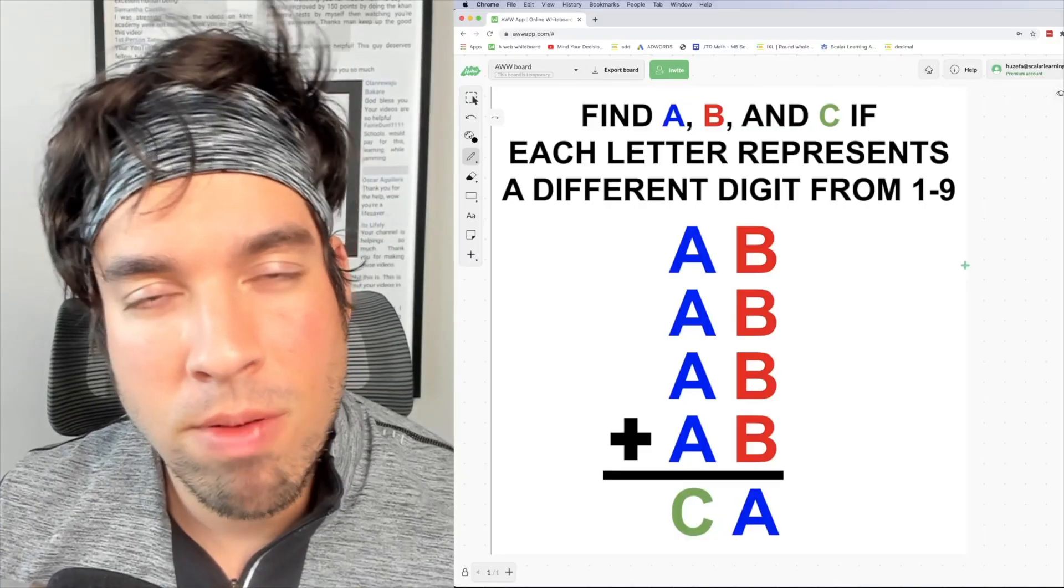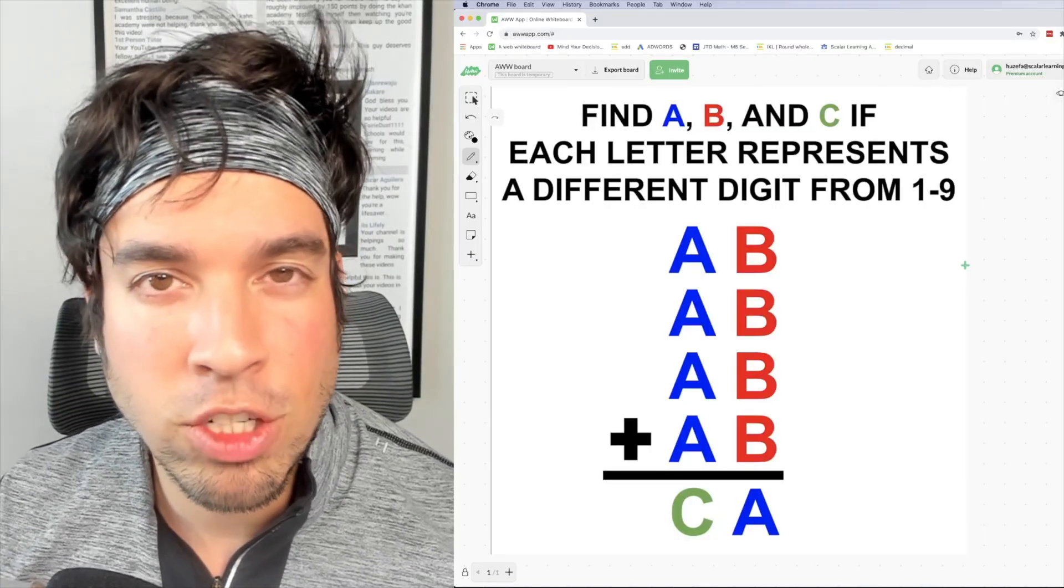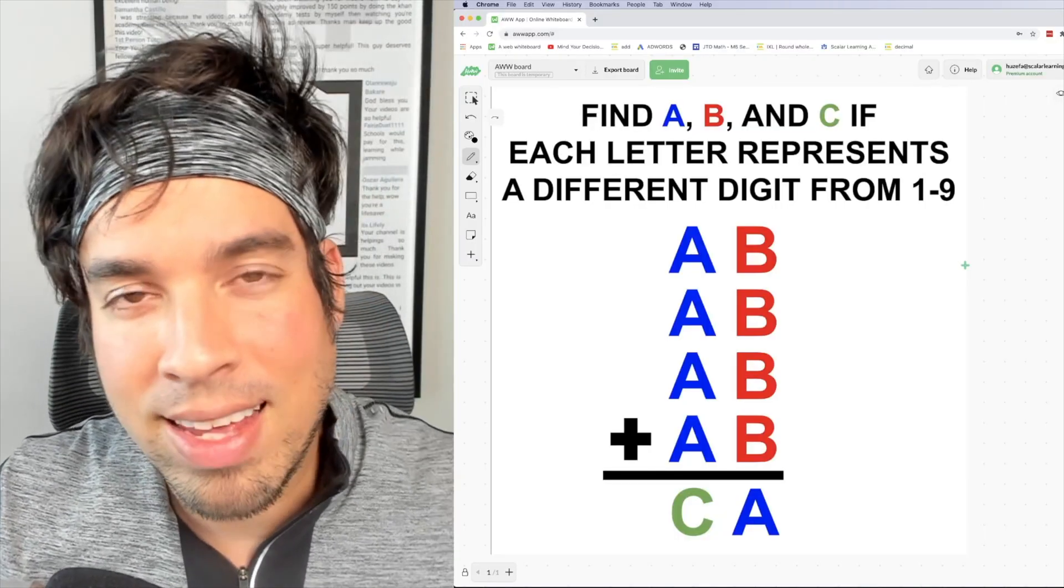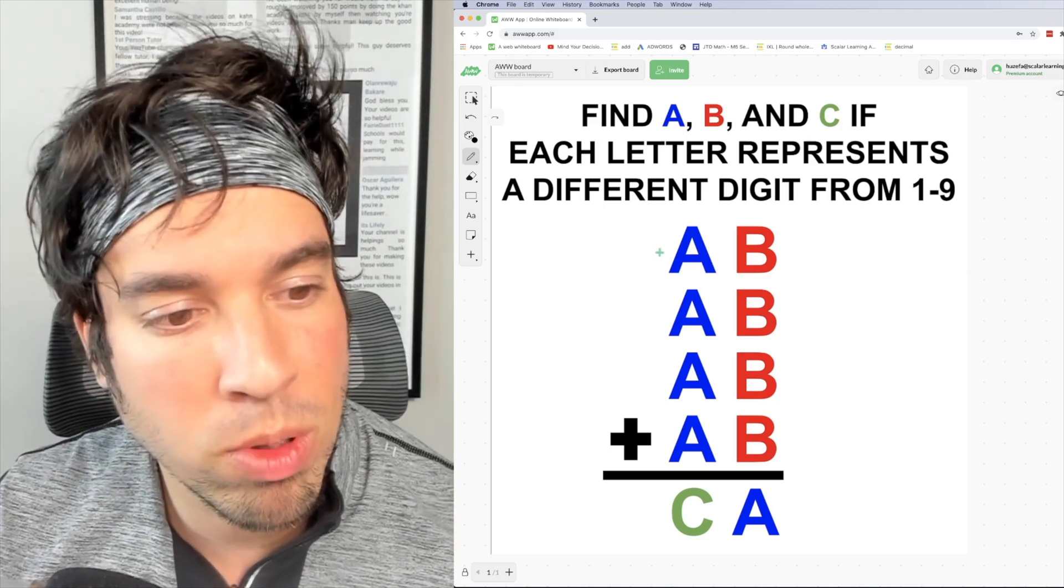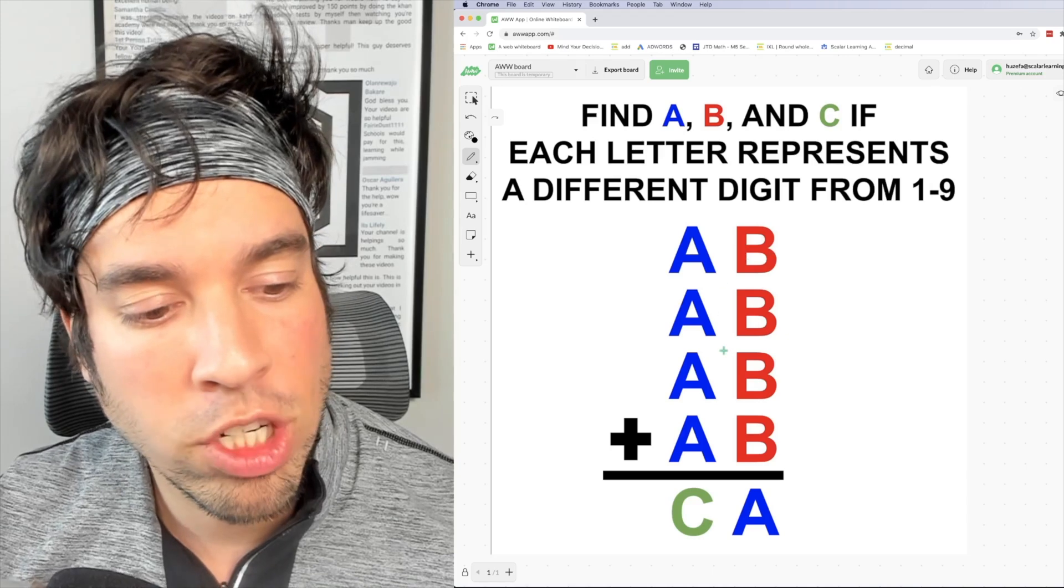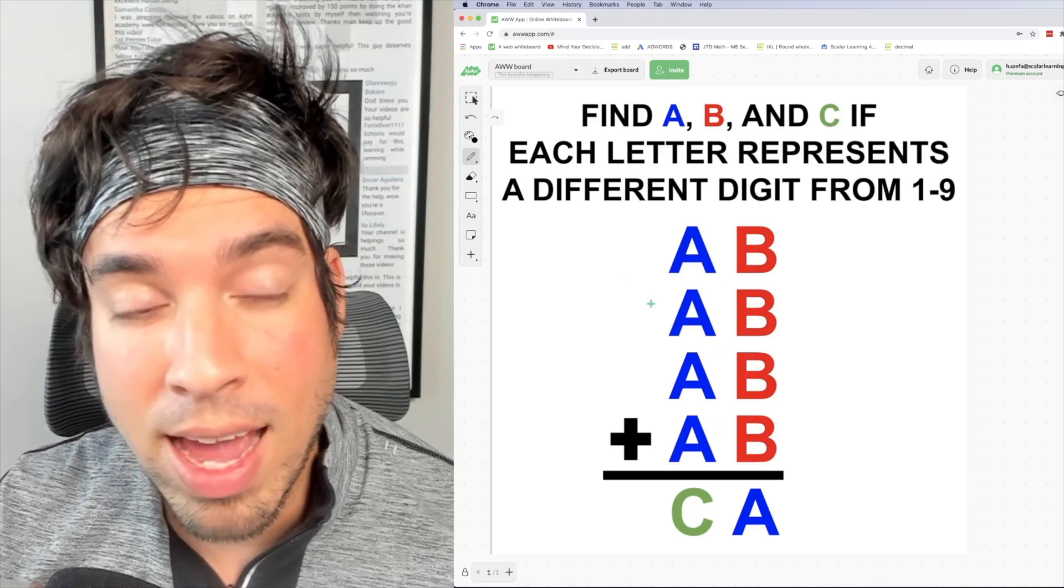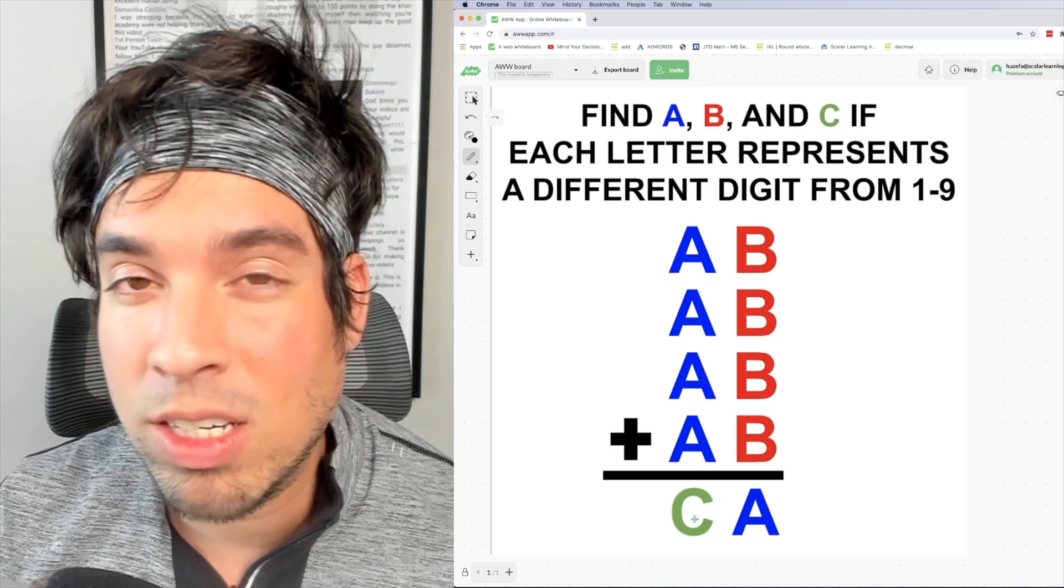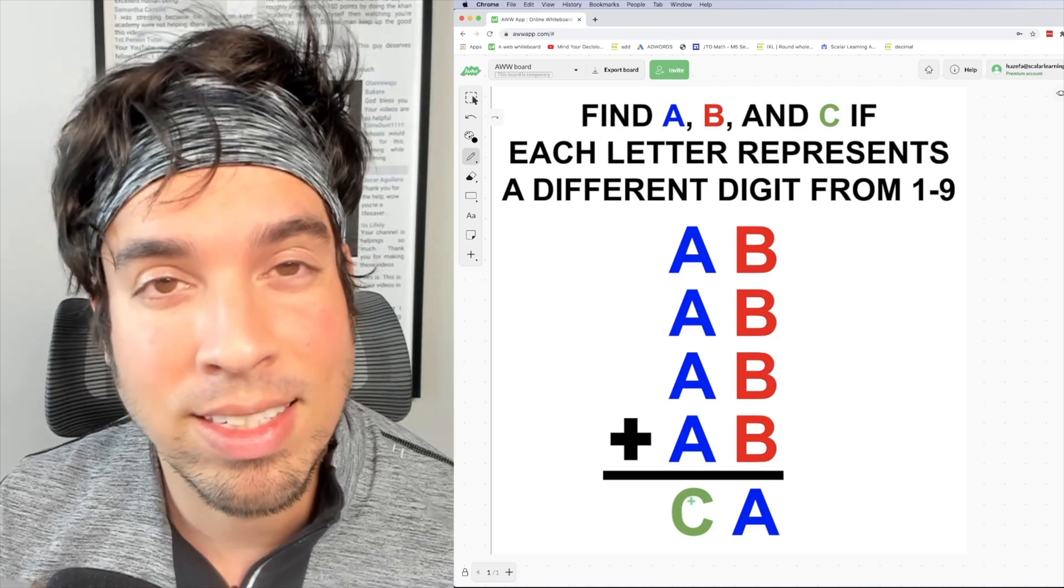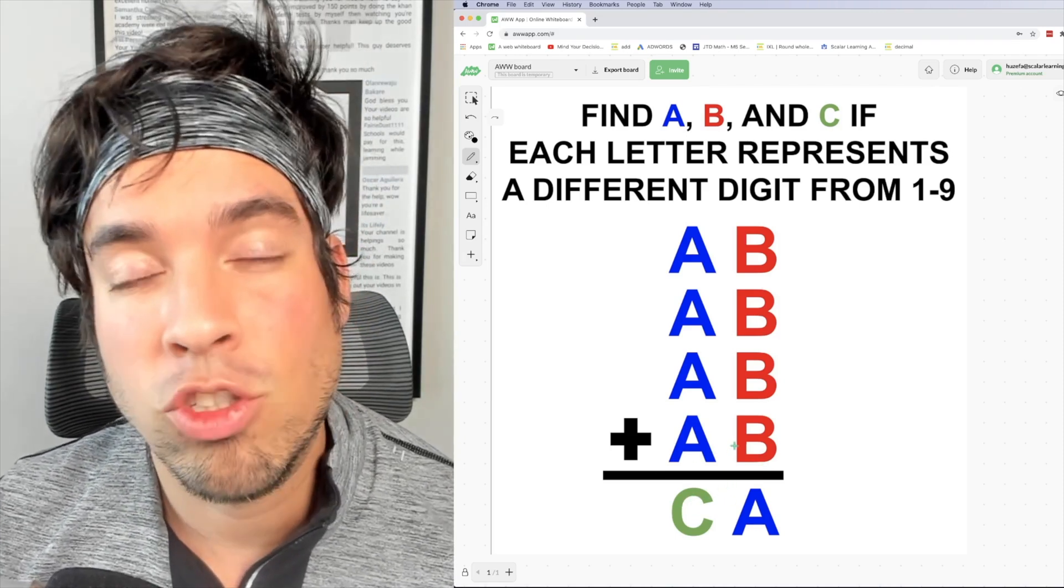So when we begin a problem like this we want to be strategic. We want to look at what's going on and that will limit our choices for these options of one through nine. So for example I see four two digit numbers, the same two digit number being added four times, and we're getting another two digit number because remember c has to be a digit from one through nine. That drastically limits my choices.